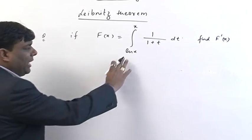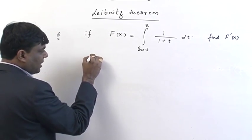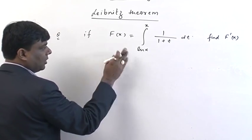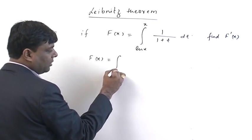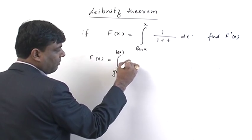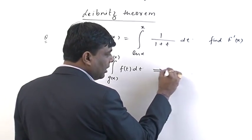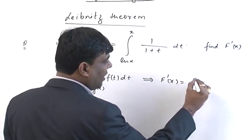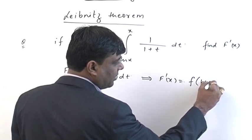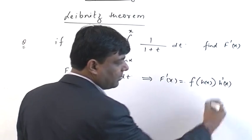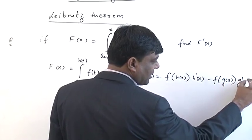So, what do we have to do? First, we apply the formula: for f'(x) of an integral from g(x) to h(x) of a function of t dt, f'(x) equals f(h(x)) times h'(x) minus f(g(x)) times g'(x).